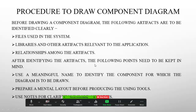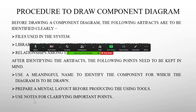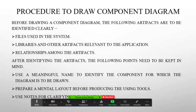After identifying the artifacts, keep the following points in mind: use a meaningful name to identify the component, just like in an object diagram — the component's name must describe its purpose so that by reading the name you know what it does. Prepare a mental layout before producing it using tools. Third, use nodes for clarifying important points — you have to use graphical notation to represent the main points in your component diagram.